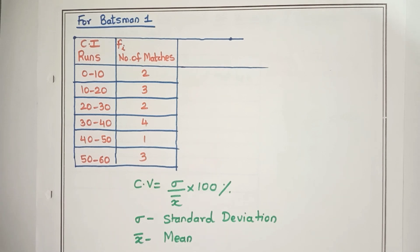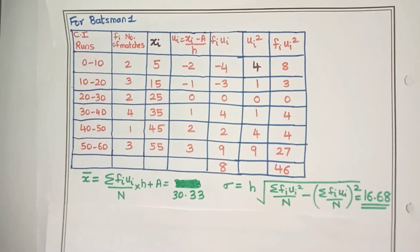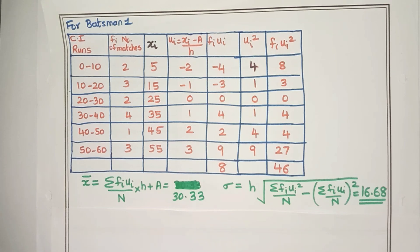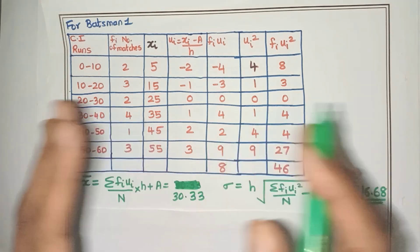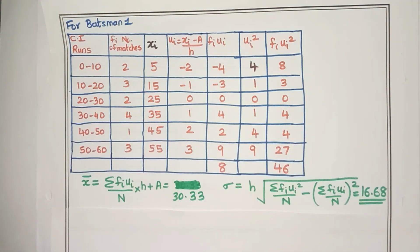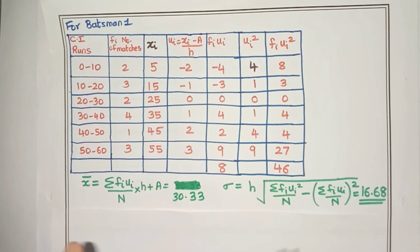Now we've already made videos on how to calculate the standard deviation and mean of data. So you can check those videos. Now we are going to use step deviation method to calculate the mean and the standard deviation. I've already done the calculations to save time. The mean of the data is coming to be 30.33 and the sigma or the standard deviation is coming to be 16.68.